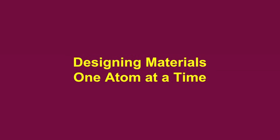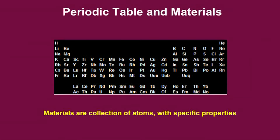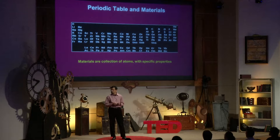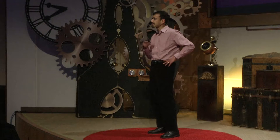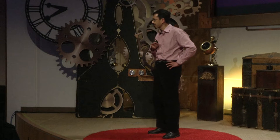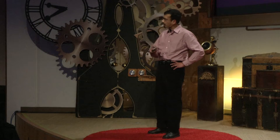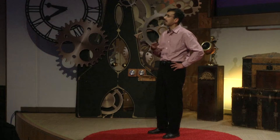Starting with one atom at a time. We go back to the periodic table you would have studied in chemistry class — essentially a classification of elements known to man, grouped based on their atomic configuration. Materials themselves are collections of these atoms, and you get properties which emerge from many of these atoms together.